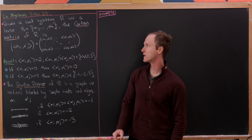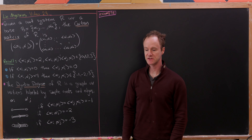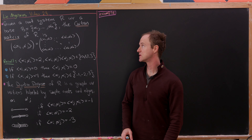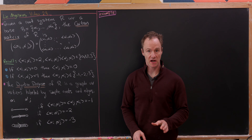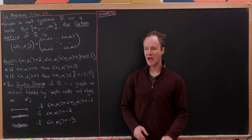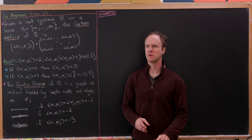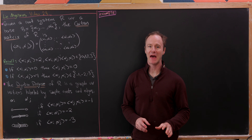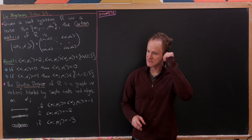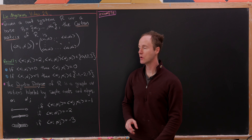This is the 23rd video in our series on Lie Algebras. Today's a big day. We're going to talk about Cartan matrices and Dynkin diagrams and prove some results which will give us a pathway towards classifying simple finite dimensional Lie Algebras.